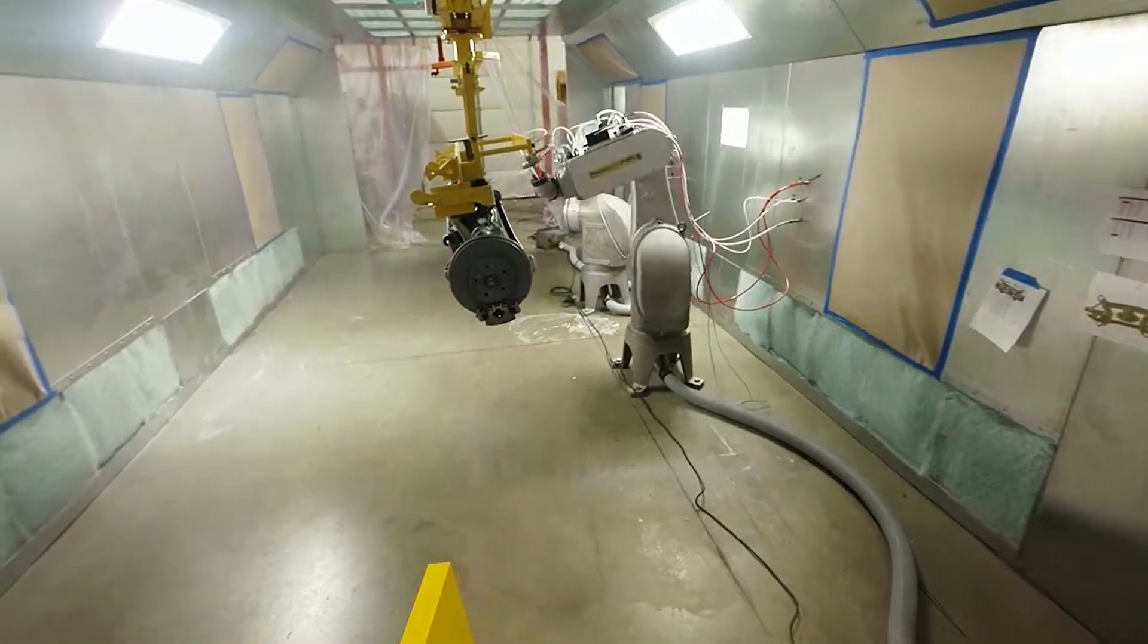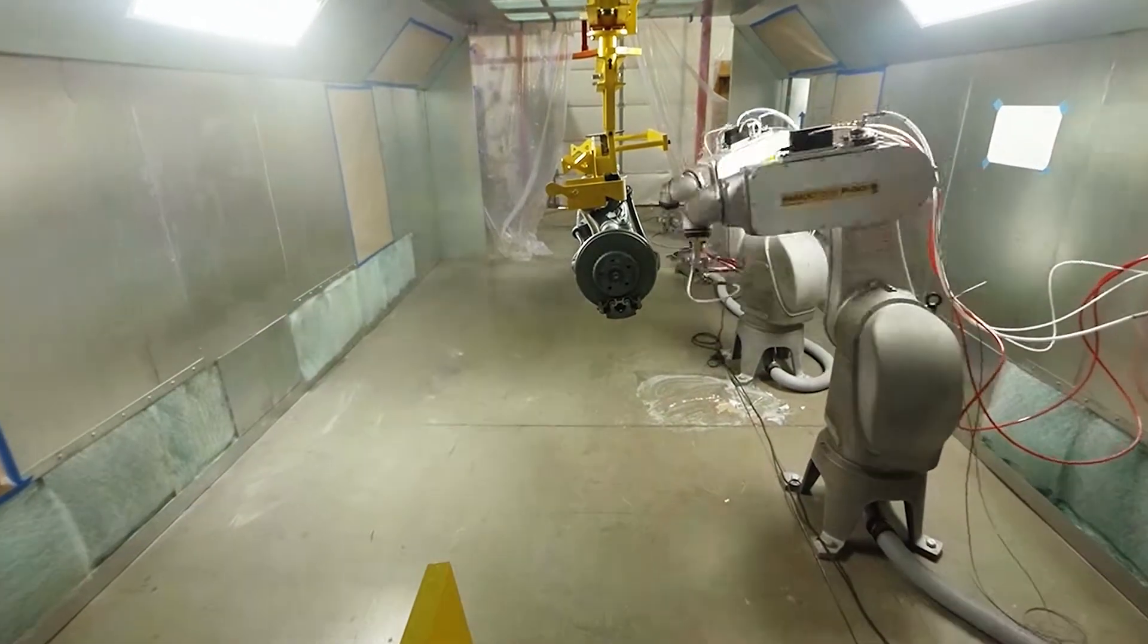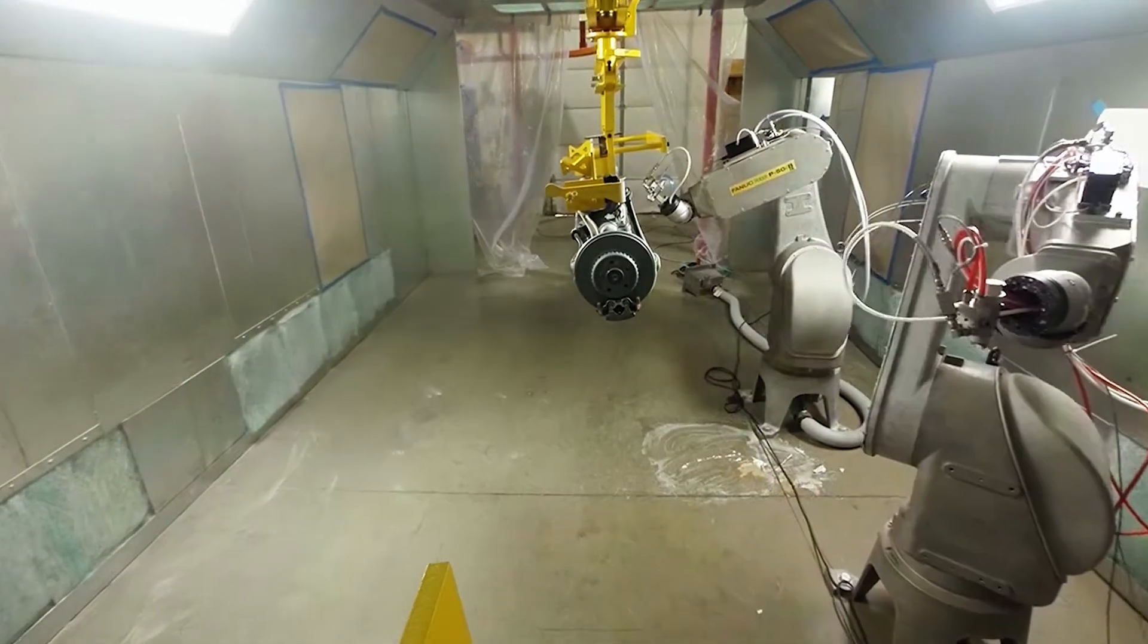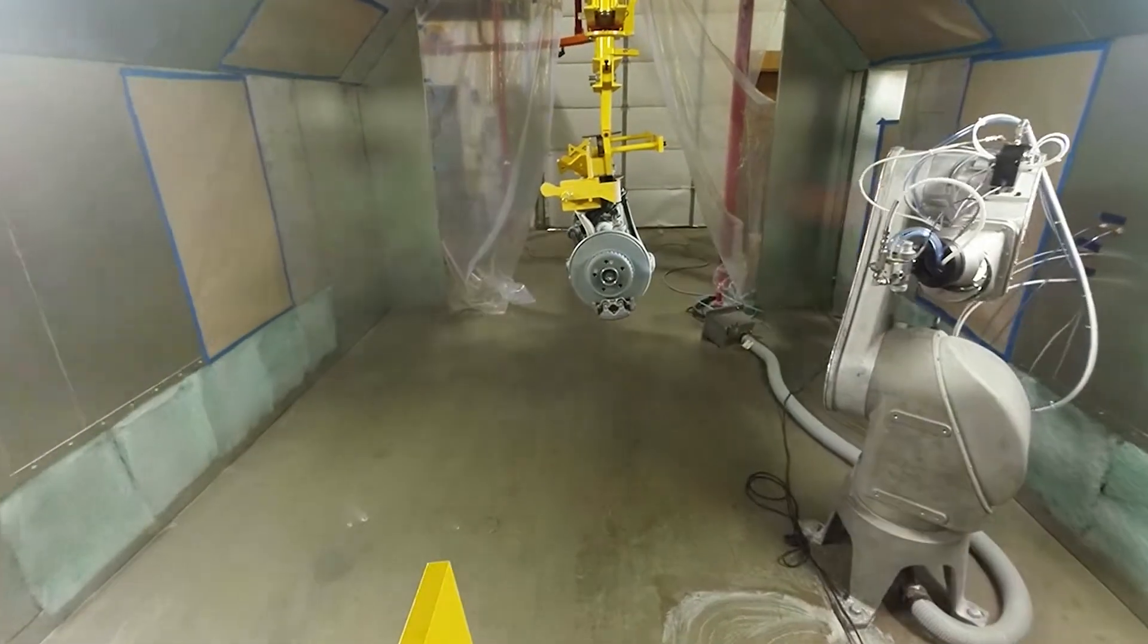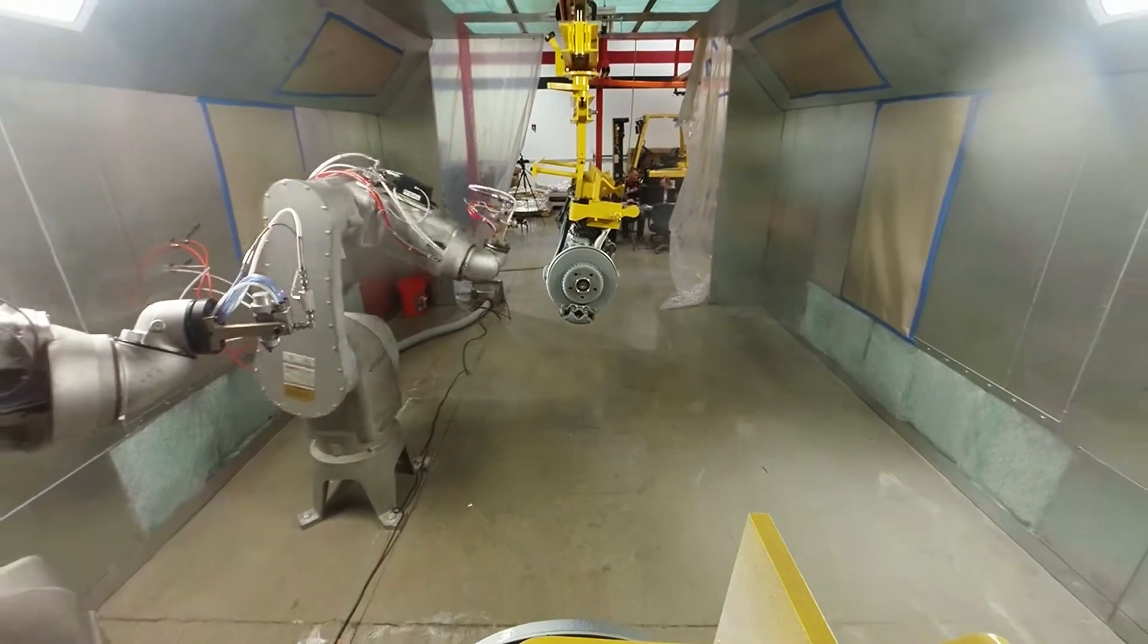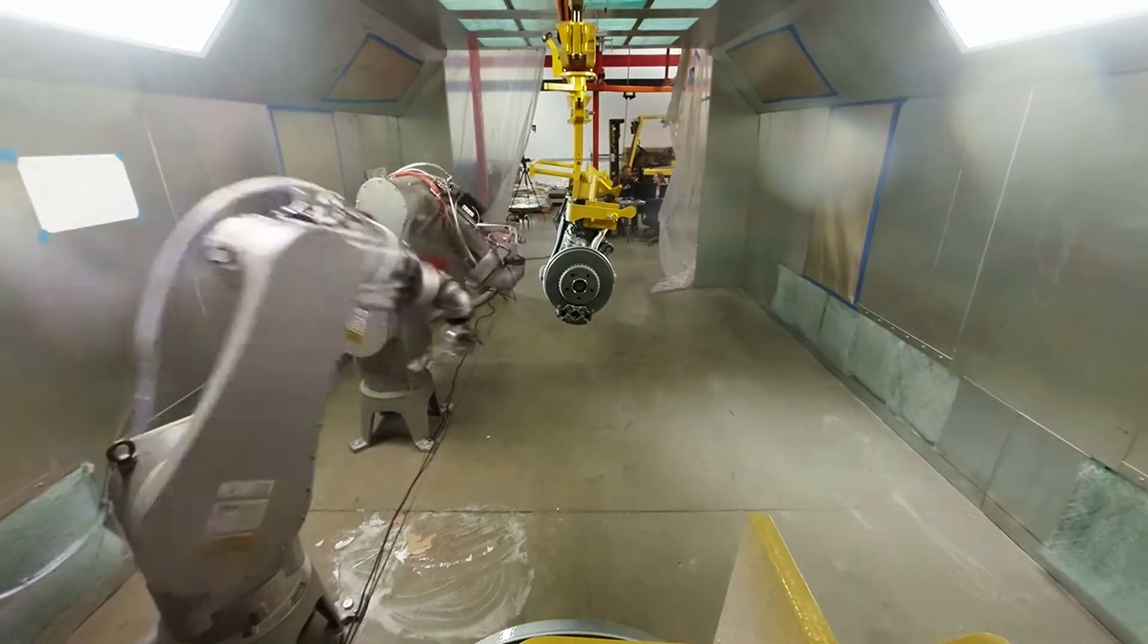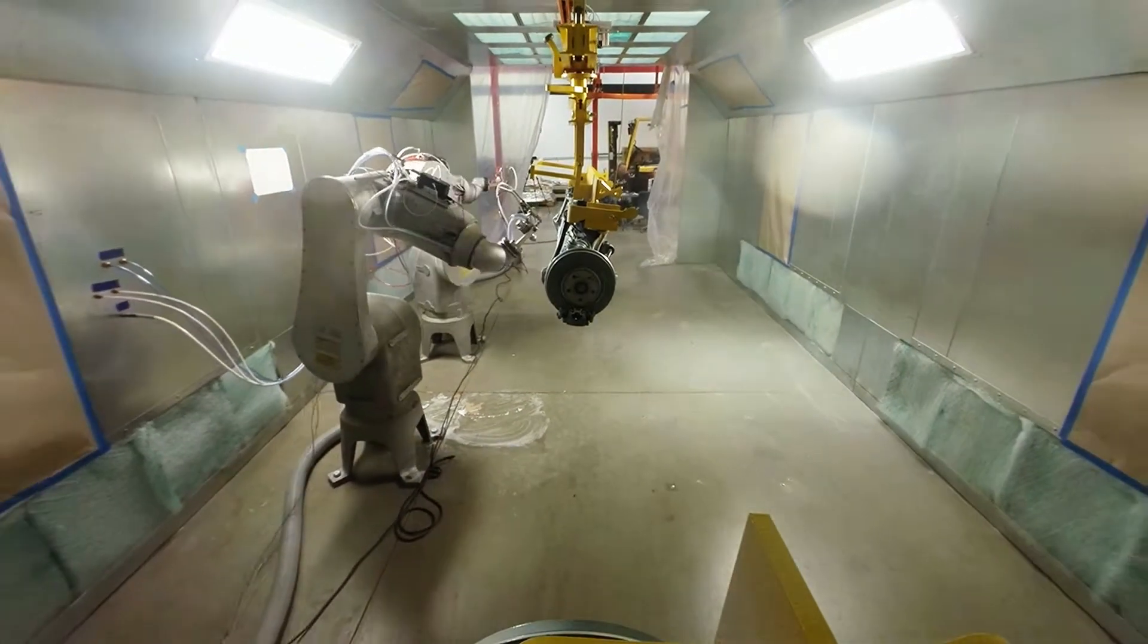And this project is specifically for paint automation. It's a full turnkey system with an overhead conveyor, robotic painting, robotic load and unload to the overhead conveyor, paint booth, oven, and full control and mechanical work done by Compass.